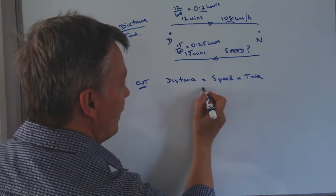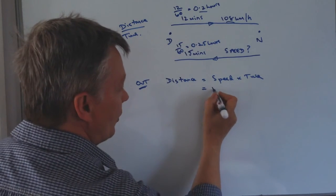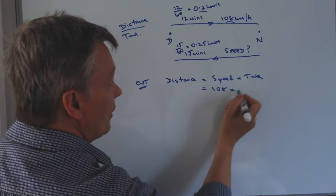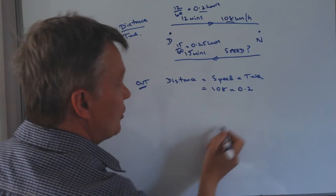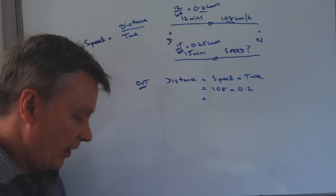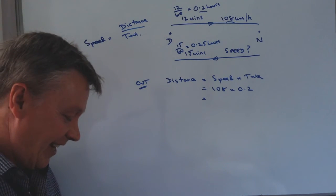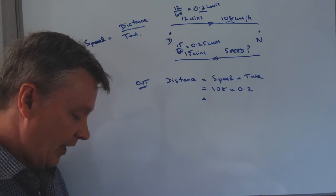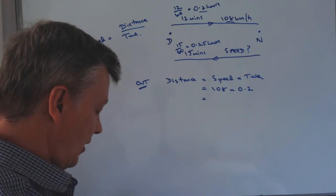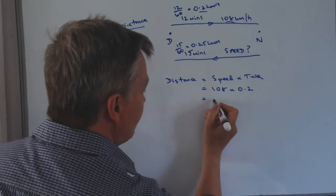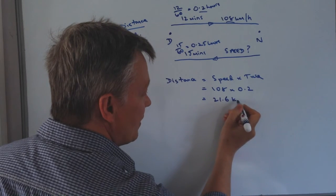So the distance then is going to be the speed which is 108 multiplied by the time which is 0.2 hours. If I put that in my calculator again, that's going to give me a distance of 21.6 kilometers.